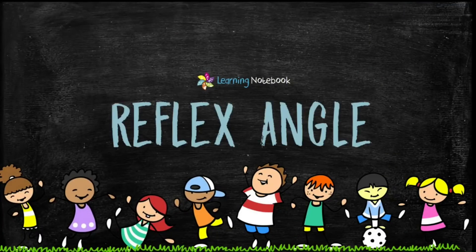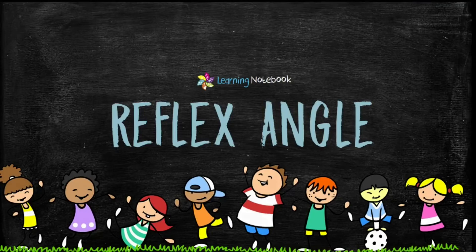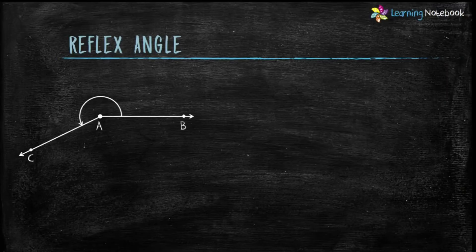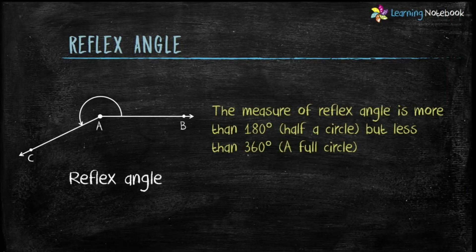The next type of angle is reflex angle. The measure of a reflex angle is more than 180 degrees but less than 360 degrees. So here, angle CAB is a reflex angle.